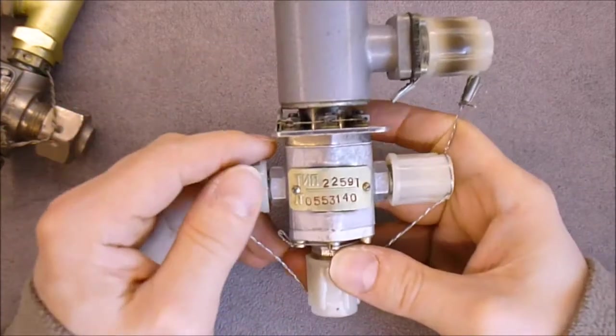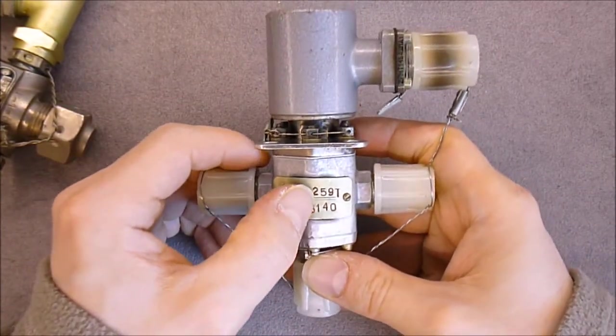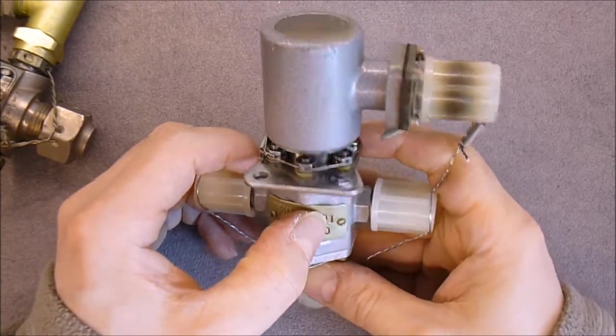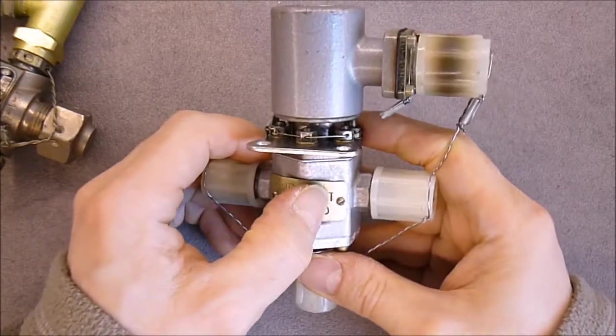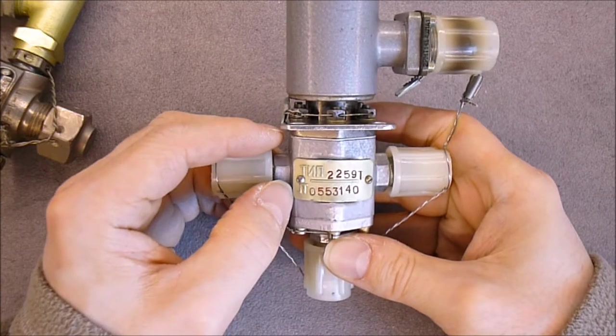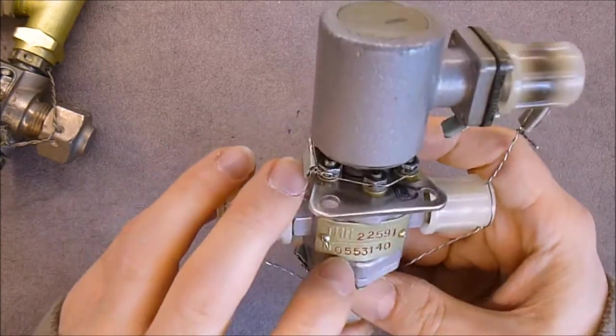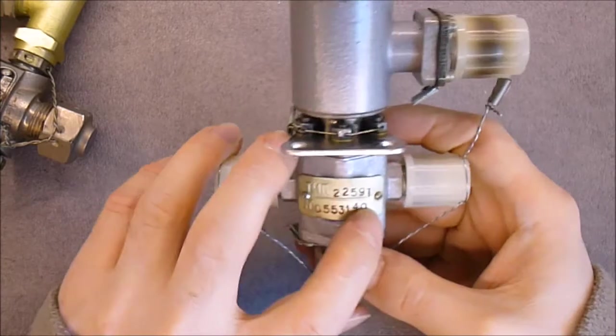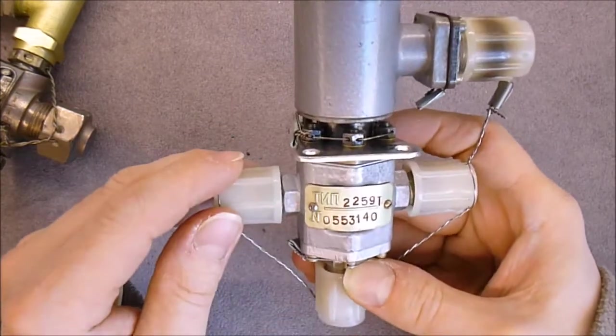So here is the model number. Tip 22, 5, 9. Either T or 1, or the same number. You can see this little plate. It is screwed on, not riveted.